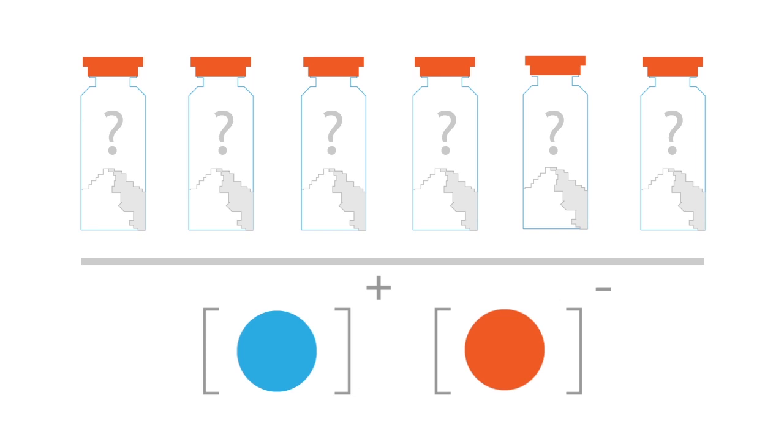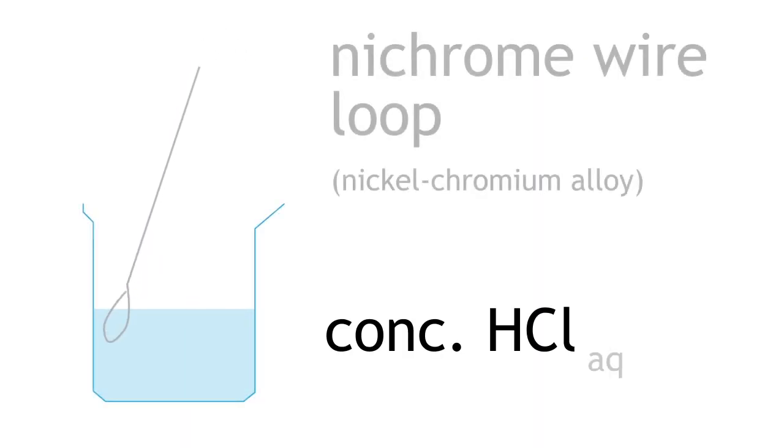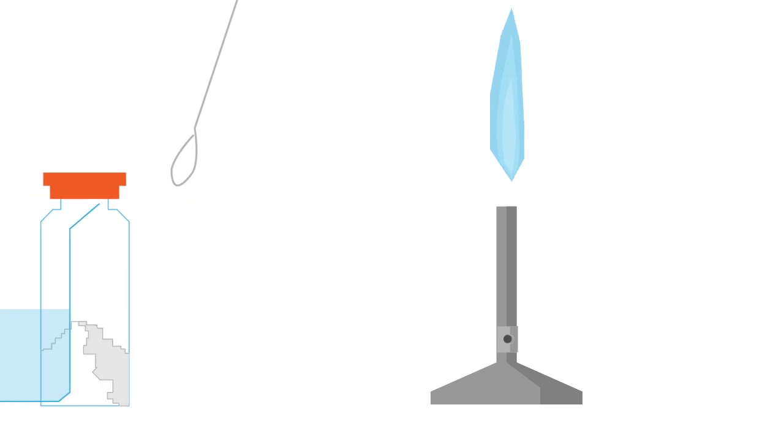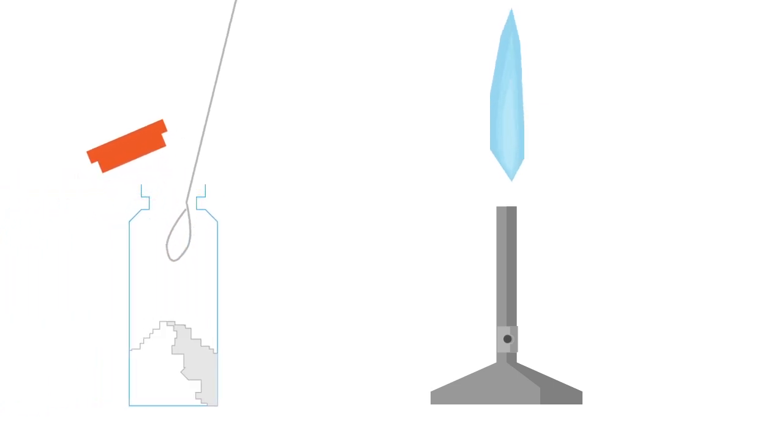To do so, you would conduct a flame test. Clean nichrome wire in concentrated hydrochloric acid and place in a roaring Bunsen burner flame. Repeat until no color is produced, thereby confirming that the nichrome wire is thoroughly clean. Place the nichrome wire in concentrated hydrochloric acid again and scoop some of the unknown solid onto the loop.